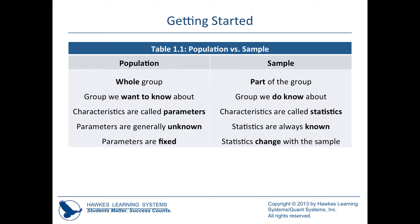It would be impossible to ask every single person in Ohio, so I'd pull out part of the group — our sample — and ask that part the question. If I pulled out 200 Ohioans and asked whether they want the Cavaliers to win, they'd tell me yes or no. From that group I'd know the values, but that wouldn't perfectly coincide with the population value. That characteristic from the sample is called a statistic. A statistic is always known because it's something you've collected from your sample. Importantly, statistics change with the sample.